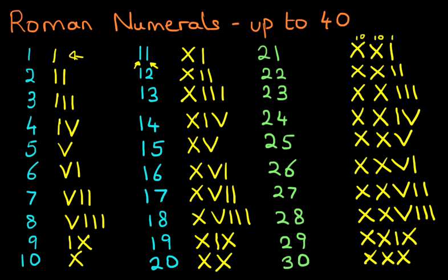How easy was that? And what that tells you is that once you know the numbers from one to ten, you can do eleven to twenty, twenty one to thirty, and also thirty one to forty.